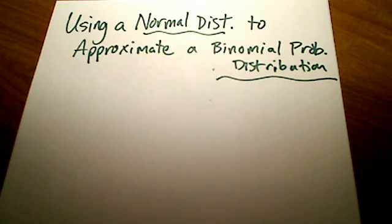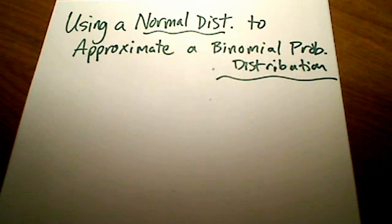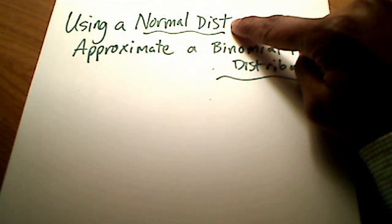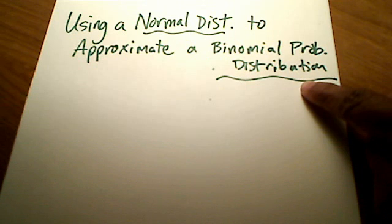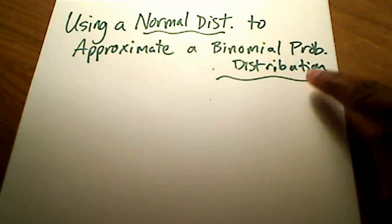This video is a demonstration, a little discussion, on how to use a normal distribution — a bell-shaped distribution — to approximate a binomial probability distribution.